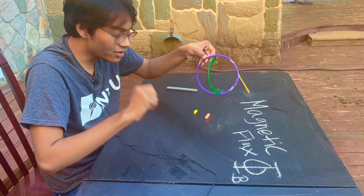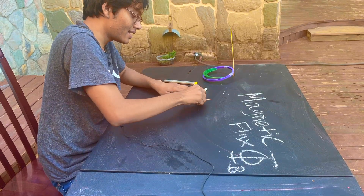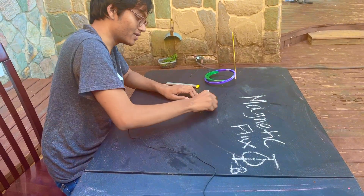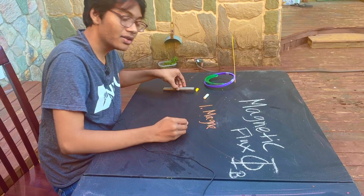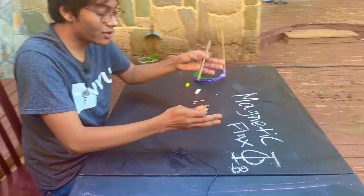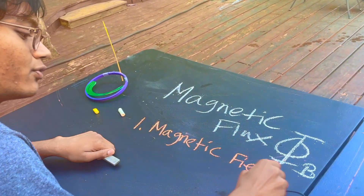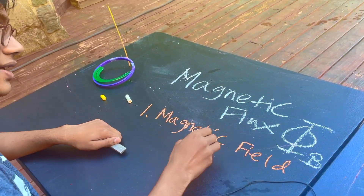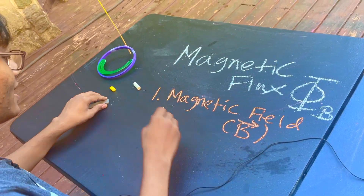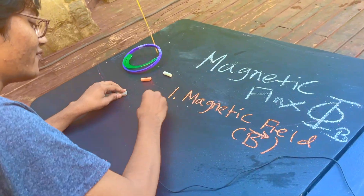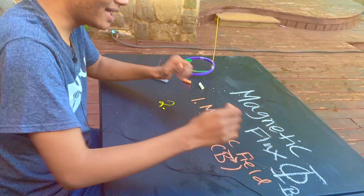Factor number one is the strength of the magnetic field — how strong is your magnet. The greater the strength of the magnetic field, the greater the magnetic flux. We represent the magnetic field with the letter B with an arrow on top, because it's a vector field.